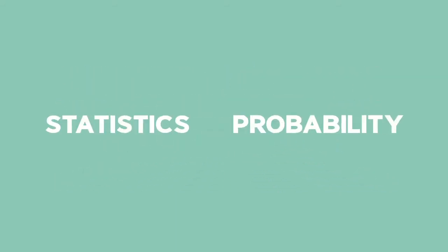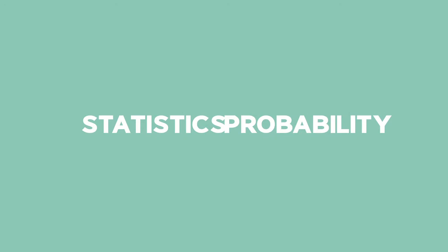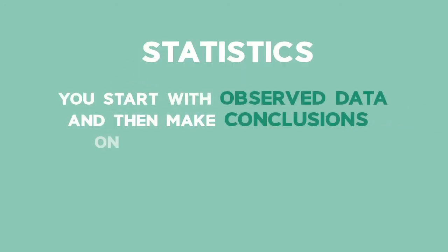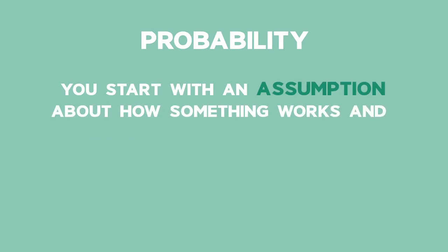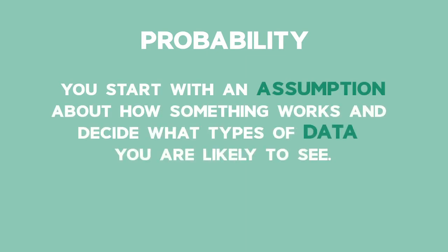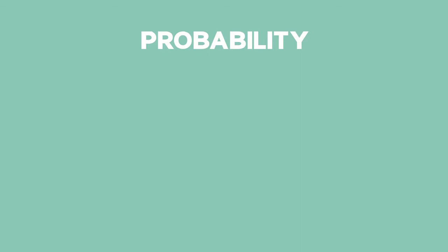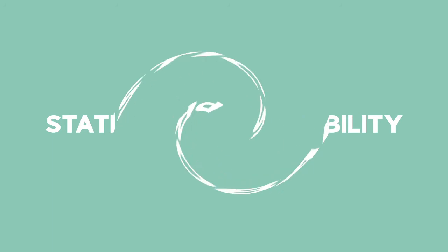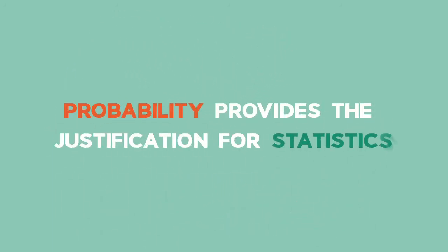Statistics and probability are two closely related topics. With statistics, you start with observed data and then make conclusions on how something works. In probability, you start with an assumption about how something works and then decide what types of data you are likely to see. You study each topic separately at school, but in reality the two are intertwined. Probability provides the justification for statistics.